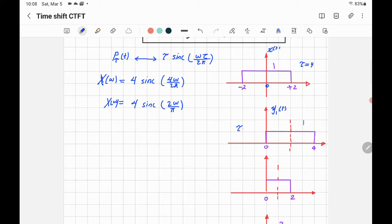So τ is equal to 4, but look at the center of the pulse. The center of the pulse for the original signal was at 0, but now it's at 2, so it's shifted by 2 units. Even if you look at 2 becoming 4, it's shifted towards the right by 2 units. So you can say that Y(t) is the same as X(t).